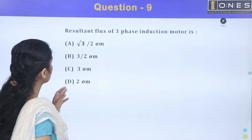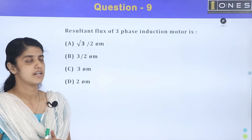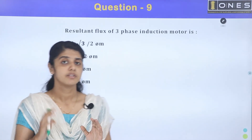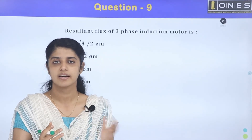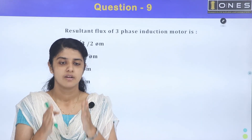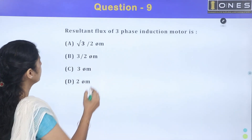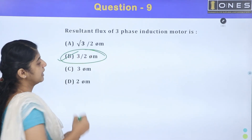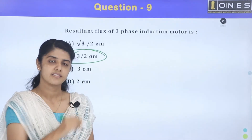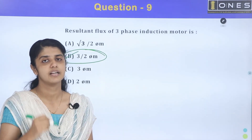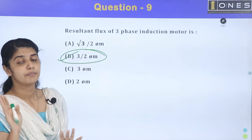Next question: the resultant flux of a three-phase induction motor. We explain the working principle of a three-phase induction motor through the rotating magnetic field. The resultant flux of a three-phase induction motor is 1.5 φm, that is 3 divided by 2 times φm.